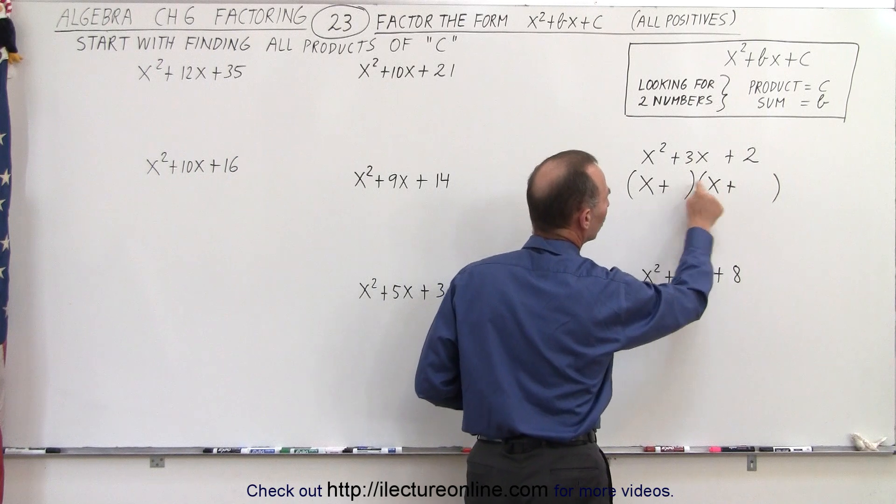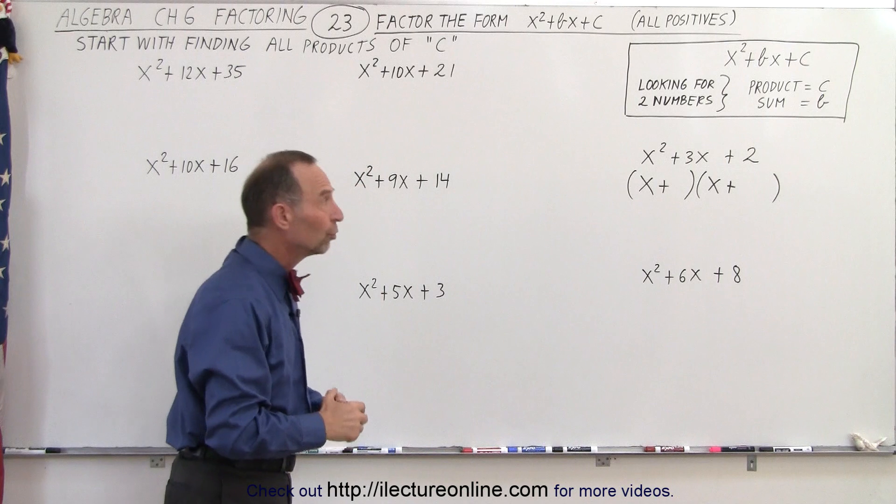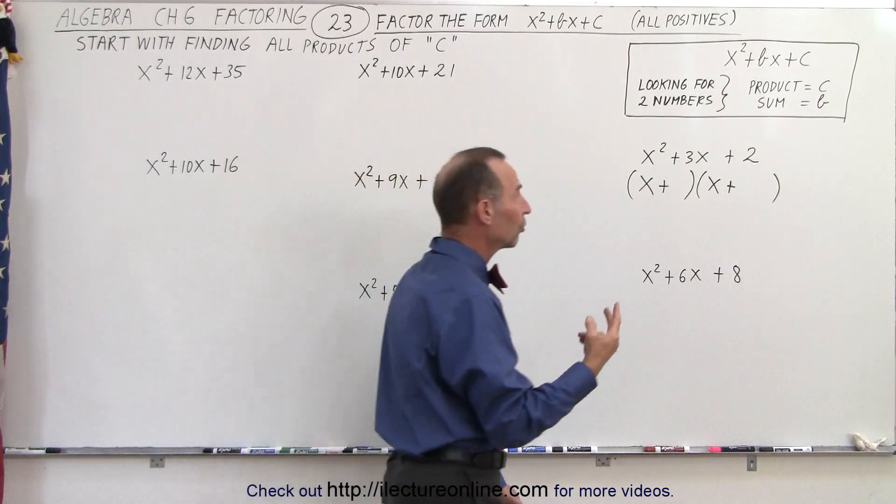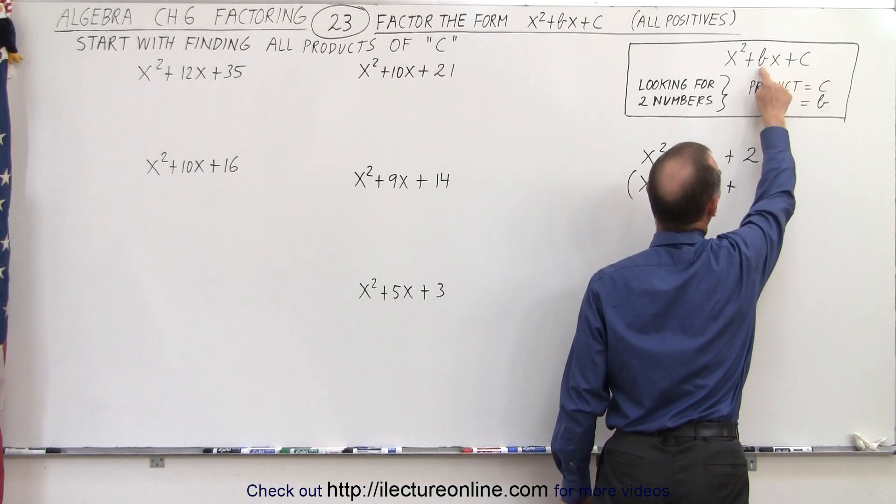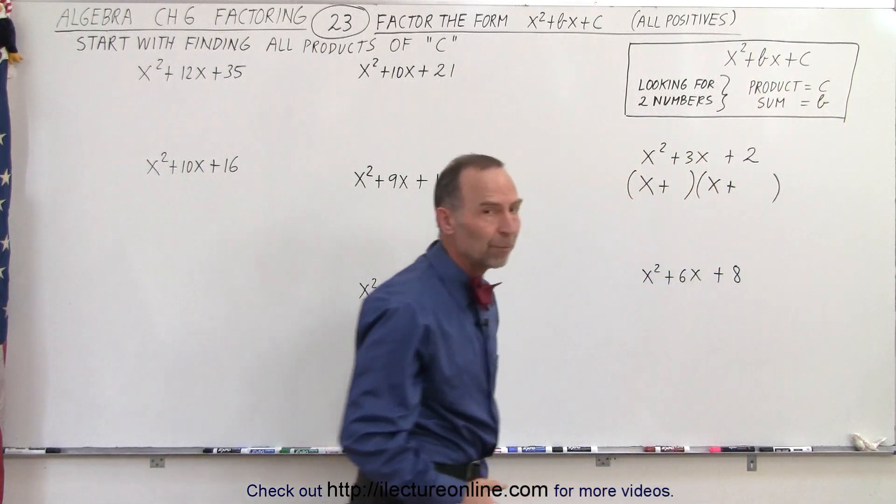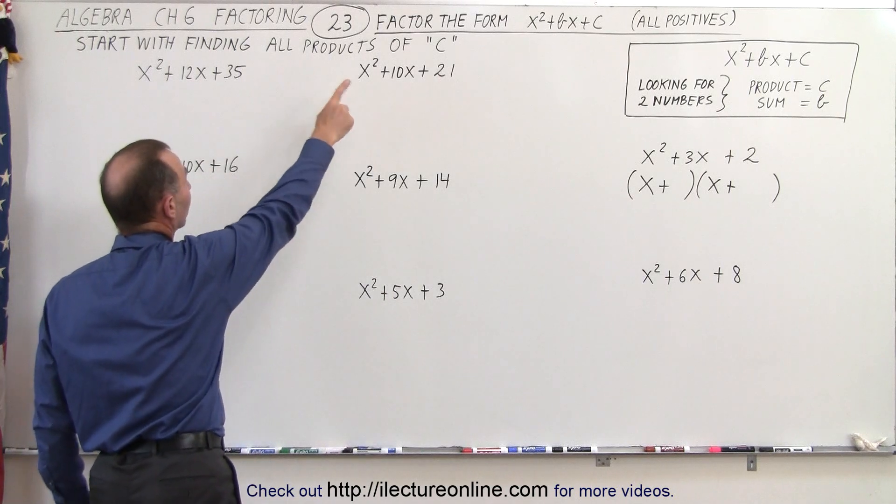In each case, we're looking for these two numbers right here. Typically, they're integers. And the way to do that is to realize the two numbers you're looking for, the product will be equal to c and the sum will be equal to b. So the strategy is that we're going to find all the products of c.